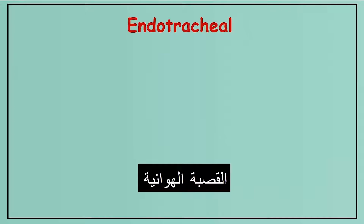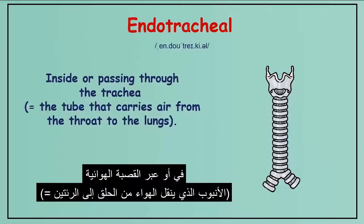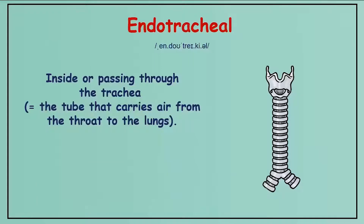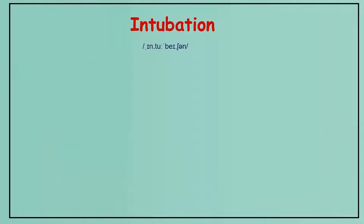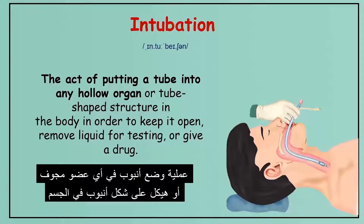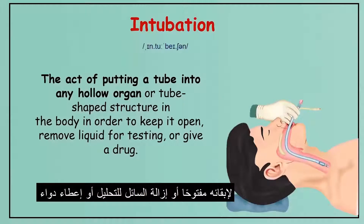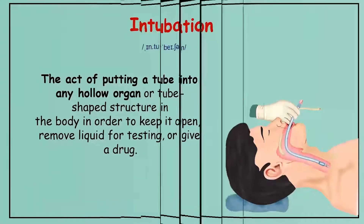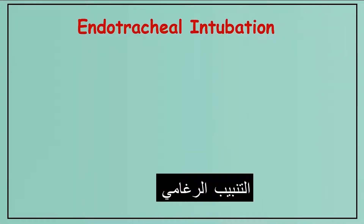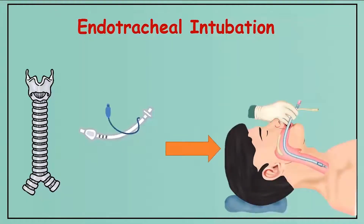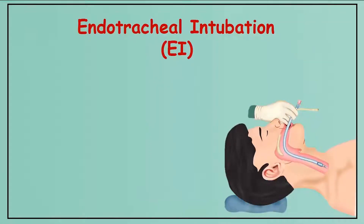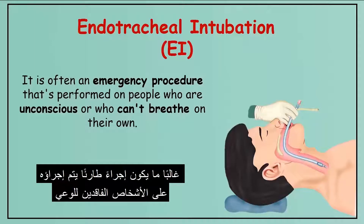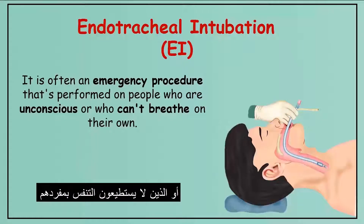Endotracheal: inside or passing through the trachea — the tube that carries air from the throat to the lungs. Intubation: the act of putting a tube into any hollow organ or tube-shaped structure in the body in order to keep it open, remove liquid for testing, or give a drug. Endotracheal intubation (EI) is often an emergency procedure performed on people who are unconscious or who cannot breathe on their own.